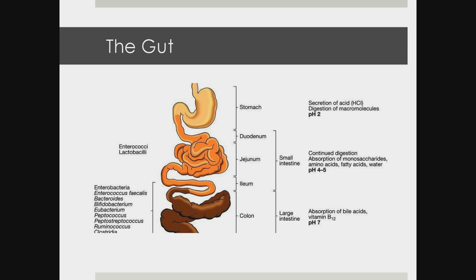When anyone refers to the gut, it's a short term but it actually encompasses a lot of organs. The digestive tract — or gut — includes three main players: the stomach, the small intestine, and the large intestine. But other organs also play a role in digestion: our salivary glands starting in our mouth, as well as the liver, the gallbladder, and the pancreas. Digestion actually starts in our mouth.